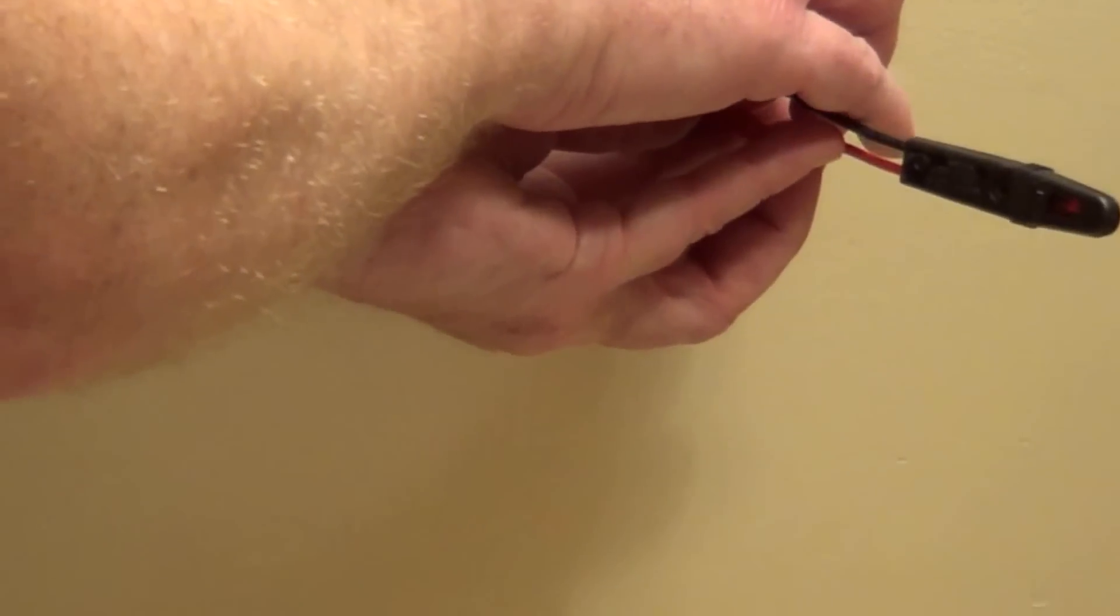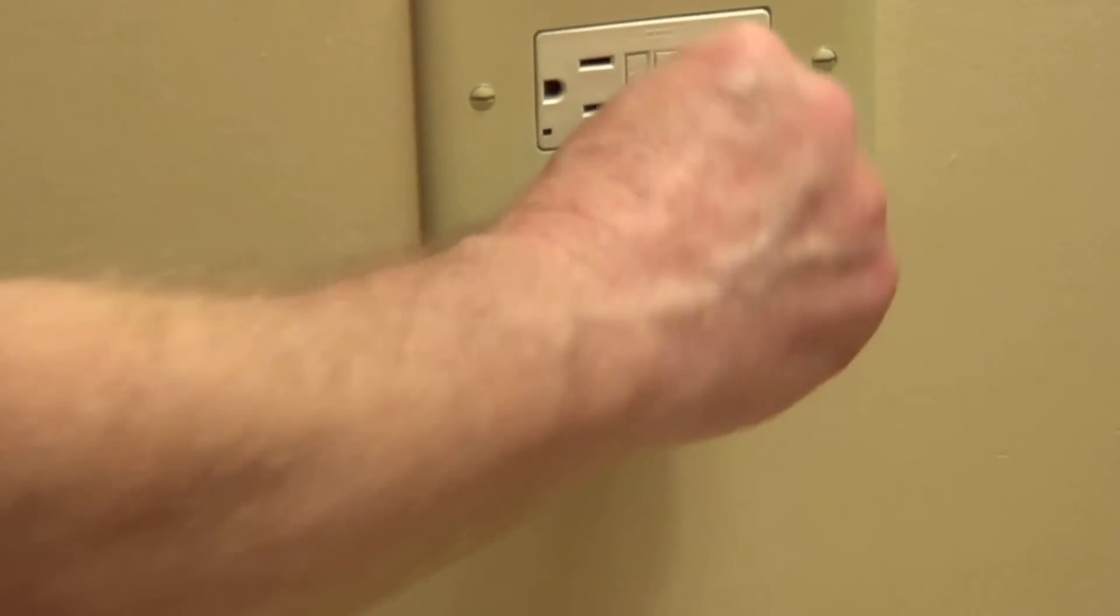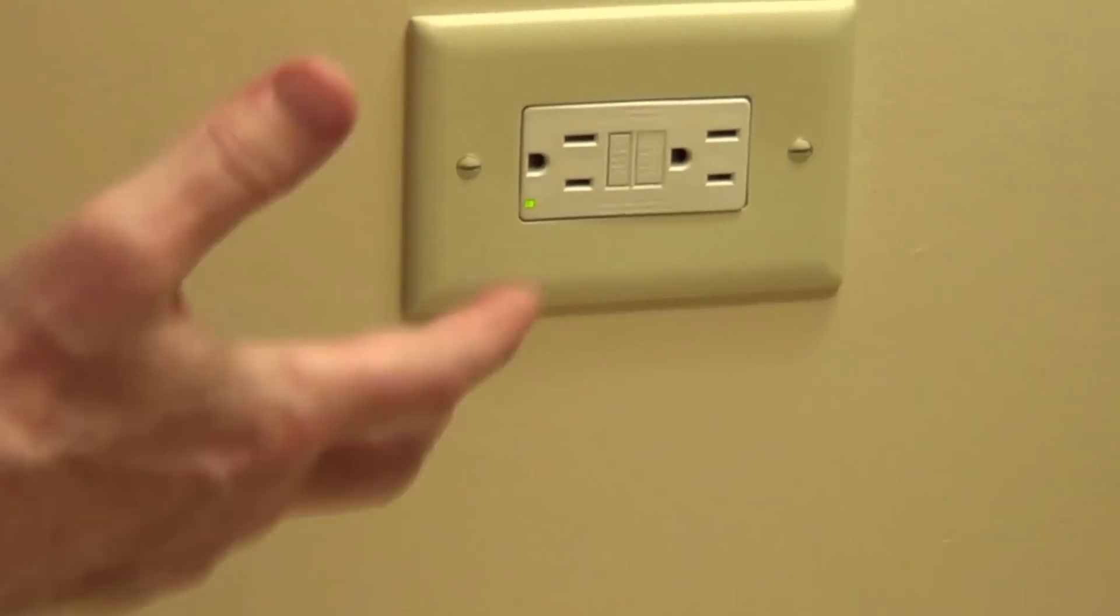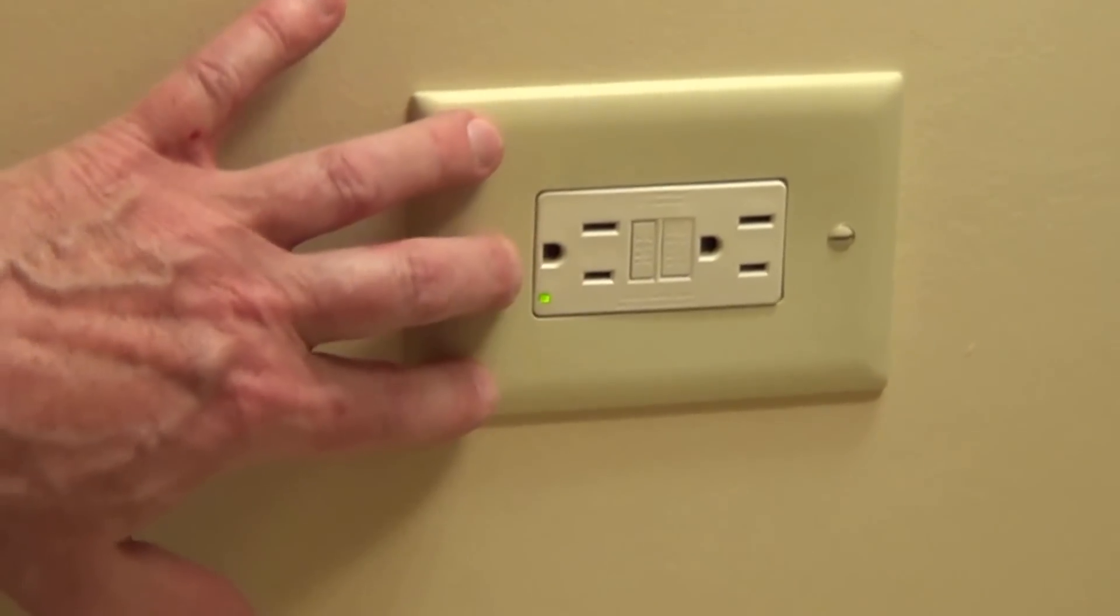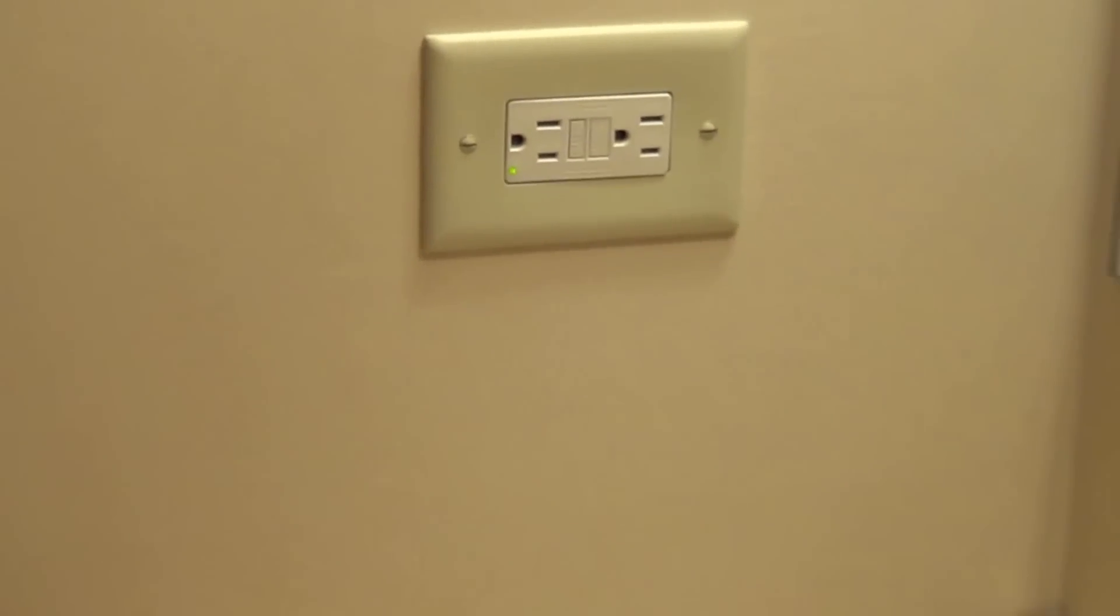It tests off, and then there's a reset button to get the electric back on. So very easy do-it-yourself project, very safe. This is what you should have if you're within six feet of any water source.